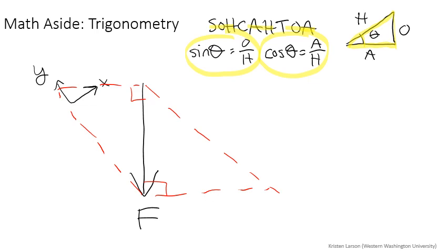What you want to do instead is to always, always, always make the vector that you're separating into components into a hypotenuse. And if it seems like it can't be made into a hypotenuse, then maybe you don't need to separate it into components at all.